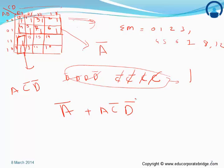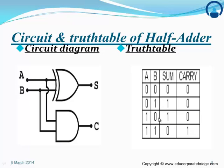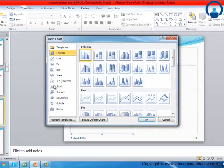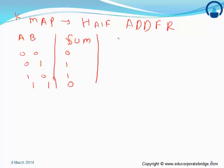Now we study the half adder. From the truth table for the half adder, the sum behaves the same way as an XOR gate. Therefore, the equation for sum in a half adder is A-bar·B plus A·B-bar. Similarly, the carry is A·B. The truth table for the half adder has inputs A, B: 0-0, 0-1, 1-0, 1-1, with sum outputs 0, 1, 1, 0 and carry outputs 0, 0, 0, 1.